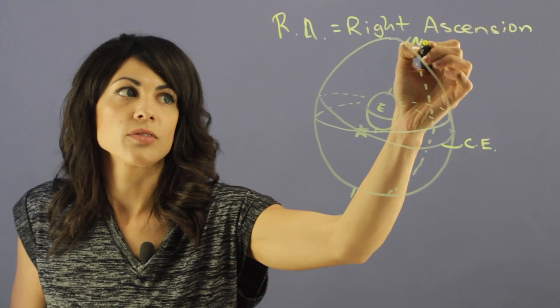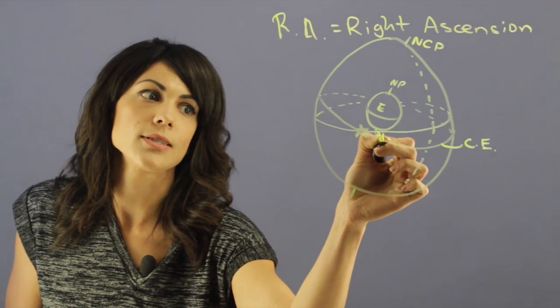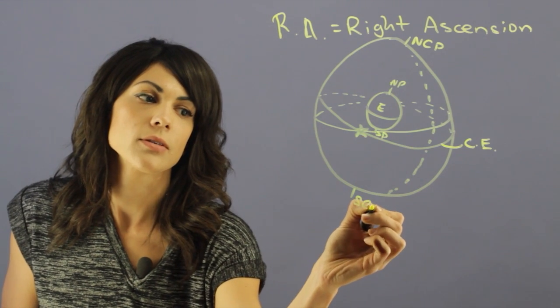Now, this is the north celestial pole. If this is the north pole and this is the south pole, then this is the south celestial pole.